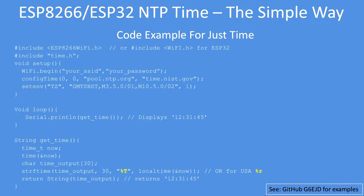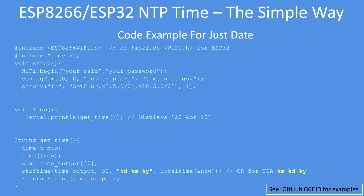For just time, there's a function called %T which shows 24-hour time format, or %R for US format giving hours, minutes, seconds, and an AM/PM indicator. For just date, you can get day/month/year or month/day/year. The parameters in the strftime function determine what's returned, and you can use forward slashes, full stops, colons — anything you like as separators.